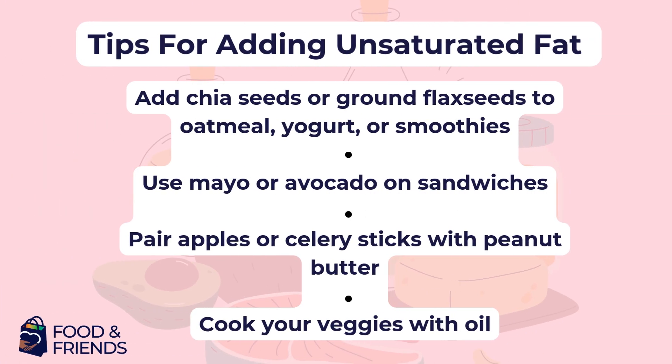Here are some additional ideas for ways you can add heart-healthy fats to meals and snacks. Sprinkle chia seeds or ground flax seeds on your oatmeal or add them to your smoothies. Use mayo — which is low in saturated fat and high in unsaturated fat — or mashed avocado as a spread on sandwiches. Pair apples or celery with peanut butter. And don't be afraid of cooking your veggies in a little oil like canola or olive oil. Remember, fats help our bodies absorb certain nutrients, so cooking your veggies in oil can help you absorb more nutrition.